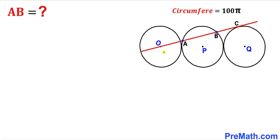Welcome to Premath. In this video we have three identical circles with centers O, P, and Q. A red line passes through center O and point of tangency C. The circles are tangent to each other, the circumference of each circle is 100π units, and our task is to calculate the length of chord AB.